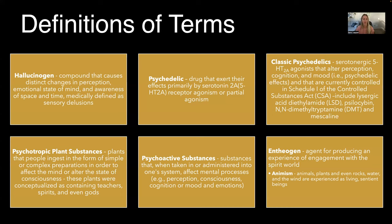Psychotropic plant substances are plants that people ingest in the form of simple or complex preparations, usually taken orally, topically, or inhaled, in order to affect the mind or alter the state of consciousness. These plants were conceptualized as containing teachers, spirits, and even gods. Psychoactive substances are substances that when taken in or administered into one's system affect mental processes like perception, consciousness, cognition, or mood and emotions.